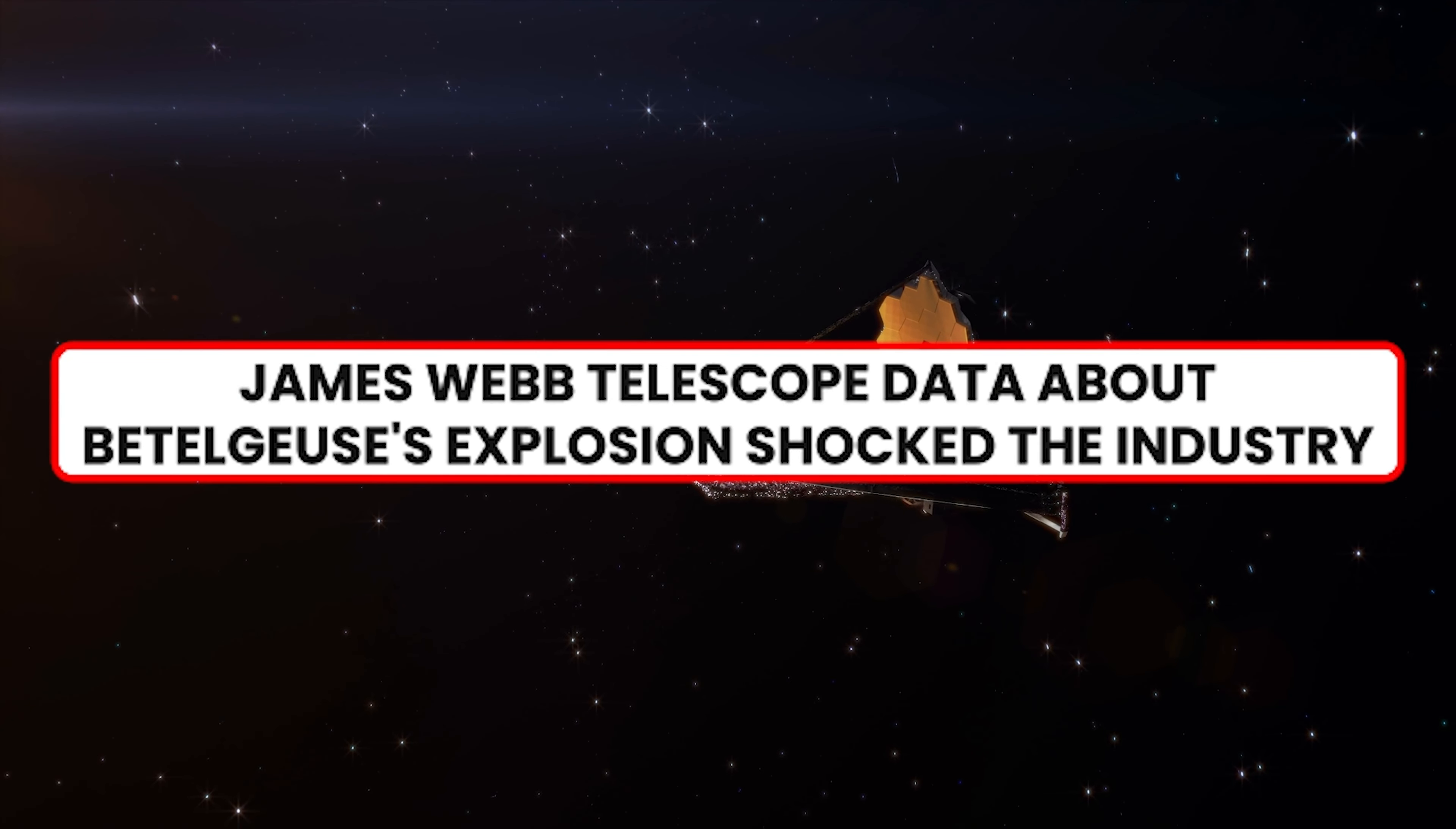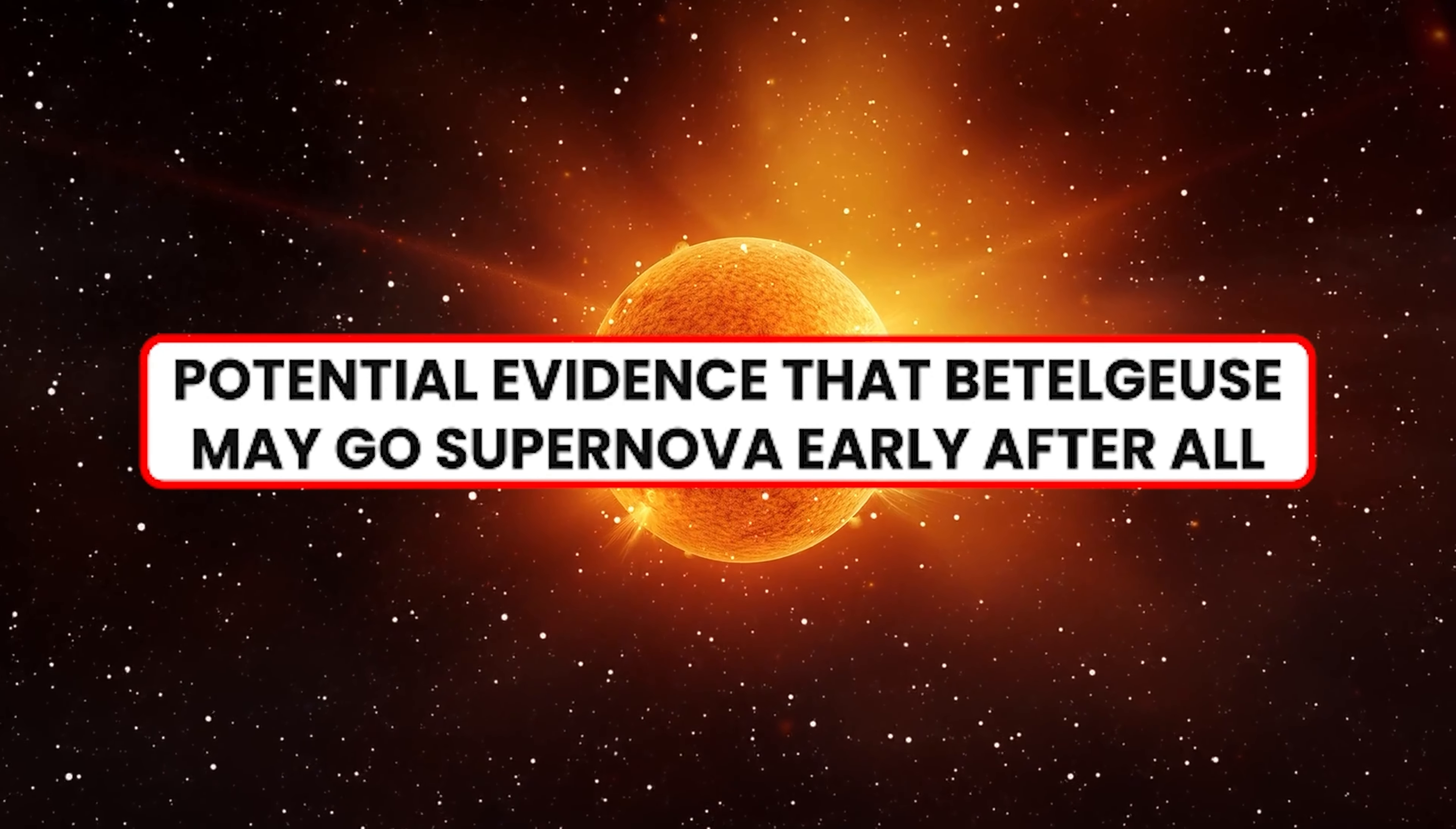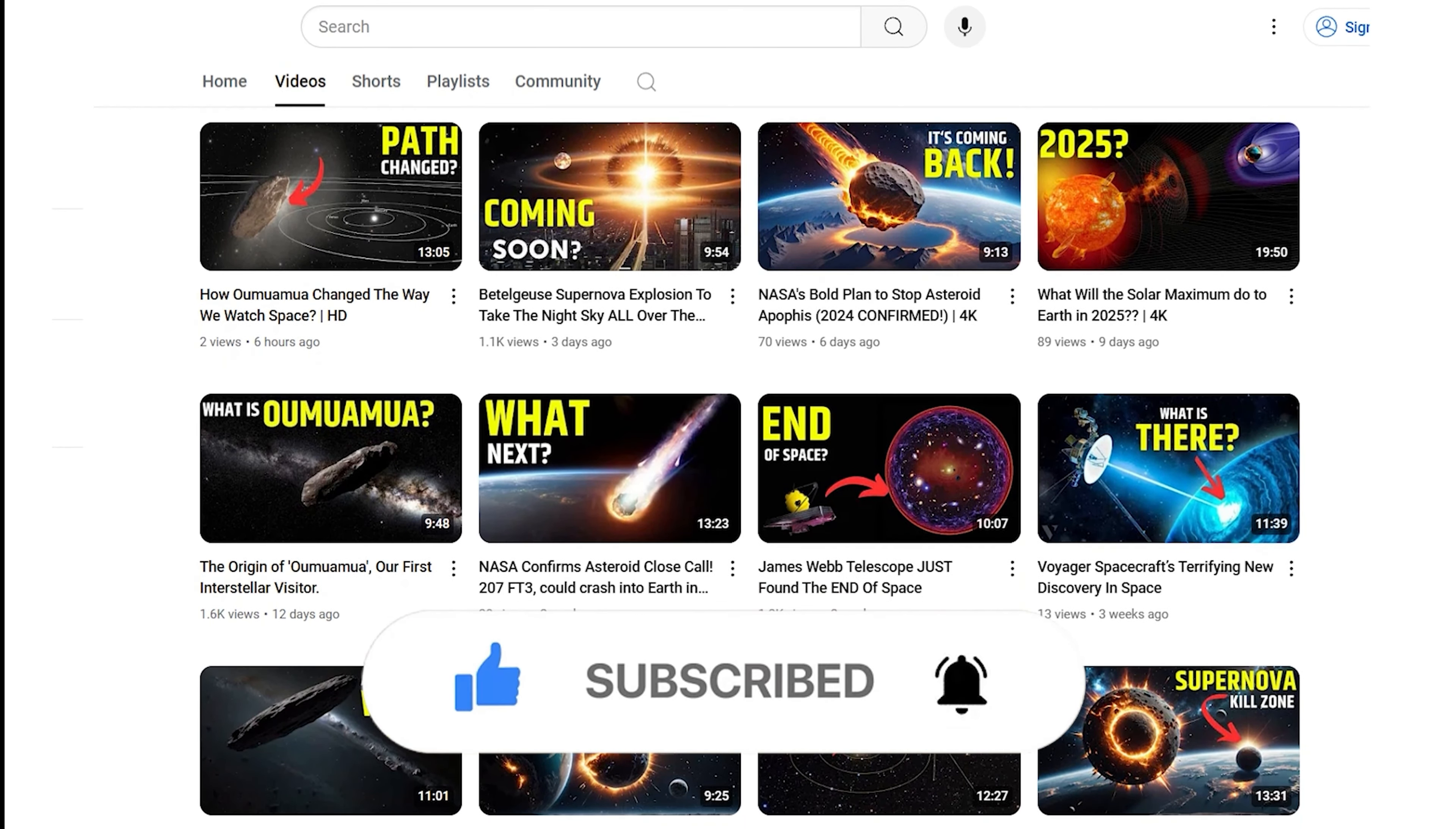James Webb Telescope Data About Betelgeuse's Explosion Shocked the Industry has more details, which we were not able to cover in this single video. So, here is another part which you can dive directly by clicking on the i button. Apart from that, potential evidence that Betelgeuse may go supernova early after all. We'll dive into that topic in an upcoming video. Would you be interested in seeing a video about how to deflect asteroids? Share your thoughts in the comments, like, and subscribe, check out other videos from the Real Gaian English channel, and make sure you ring the bell for our latest content.